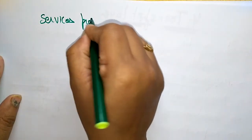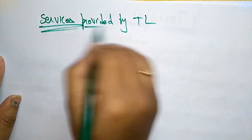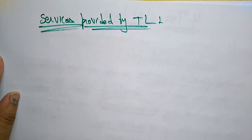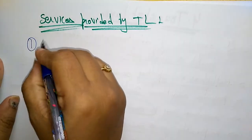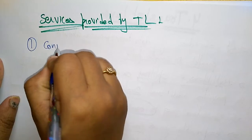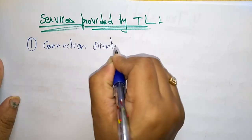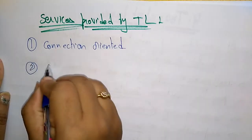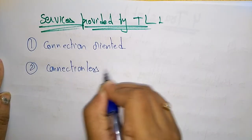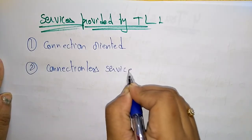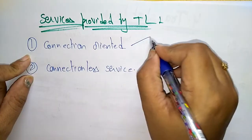The transport layer provides two types of services: connection-oriented service and connectionless service. These are the two main services it provides.